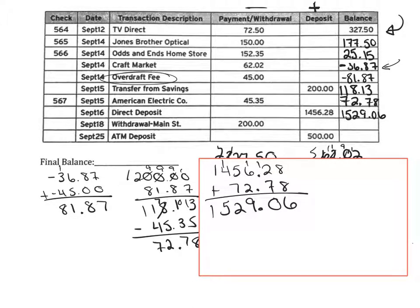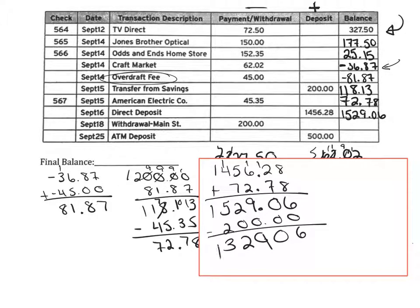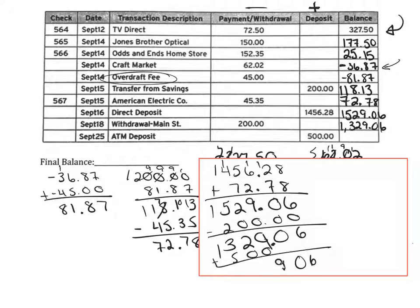Then they are withdrawing $200, so we take $200 from $1,529.06 and we are left with $1,329.06. And then we're going to add $500 to that, which will leave us with $1,829.06.